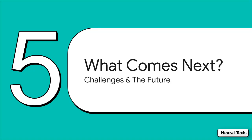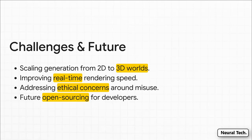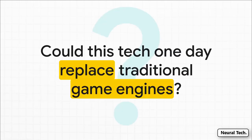We have to be realistic — this tech is still very new. The obvious next frontier is scaling up from 2D platformers to complex 3D worlds, which is a huge jump. Performance is another challenge — rendering speeds need to come way up for seamless real-time gameplay. And of course, there are big ethical questions around AI-generated content that the whole industry is grappling with. But maybe the most exciting thing on the horizon is that Google has said they plan to eventually open-source Genie, which would pour jet fuel on this entire field of research. The final massive question: as world models like Genie get better, could they one day actually replace the big code-heavy game engines we use today, like Unity or Unreal? The line between creating a game and playing one might be about to get very blurry.